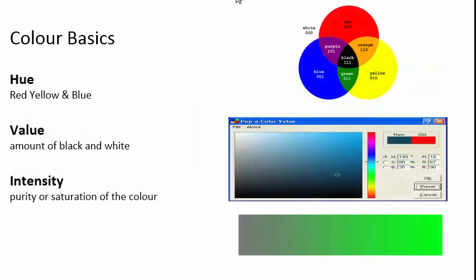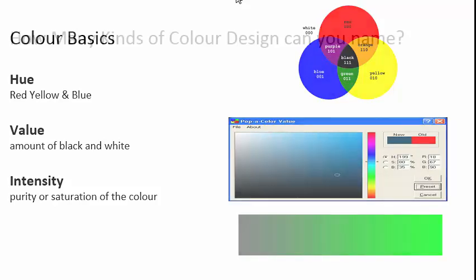So that's the color basics: hue — red, yellow, and blue; value — the amount of black and white; and intensity — the purity of the saturation and of the color.